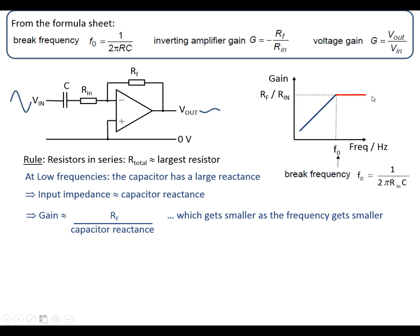The frequency at which the two regimes change is called the break frequency, and that's f equals 1 over 2π RC. But the resistor in this case is the input resistor, because that's the resistor that's in the same part of the circuit as the capacitor.